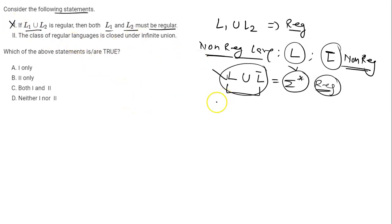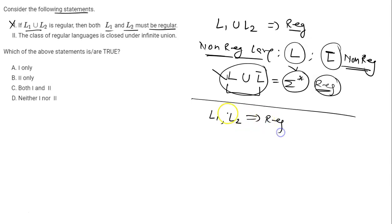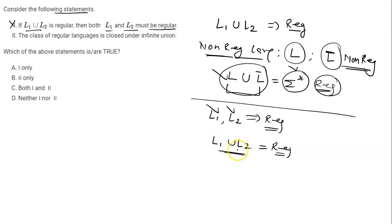To clarify: if the statement were the other way — that L1 and L2 are both given to be regular — then you can say L1 union L2 will be regular, because regular languages are closed under union. It means if you have two regular languages, their union will also be regular. But Statement 1 as given is false.